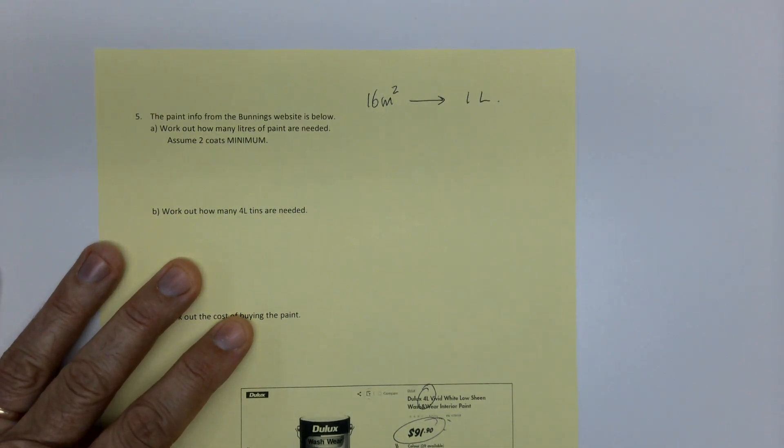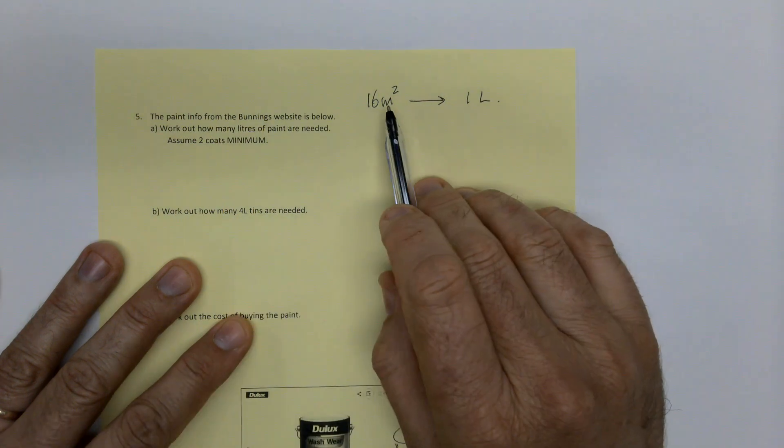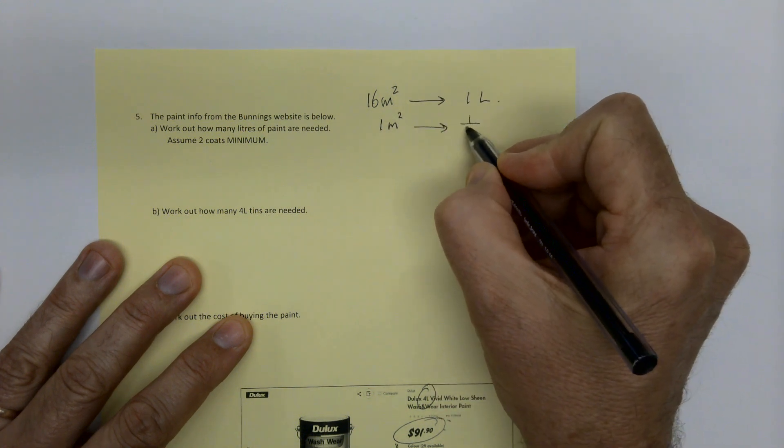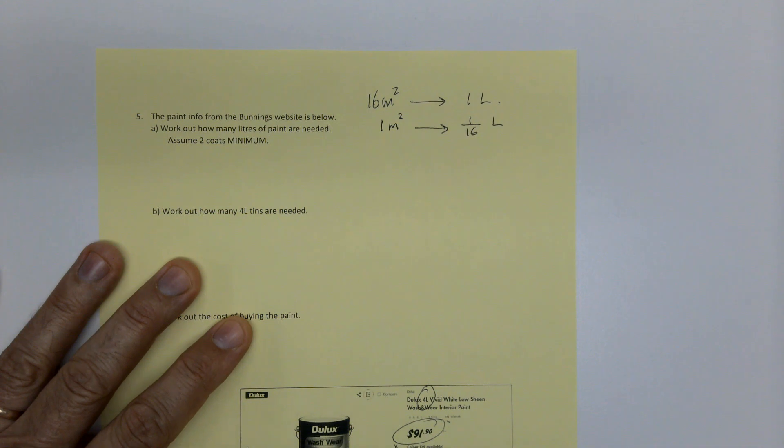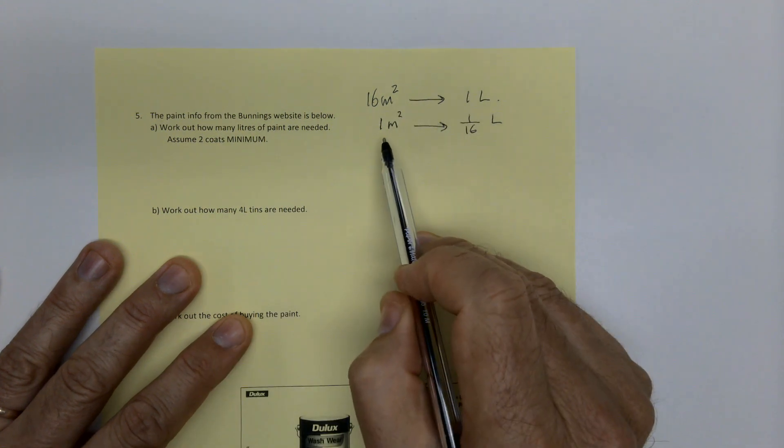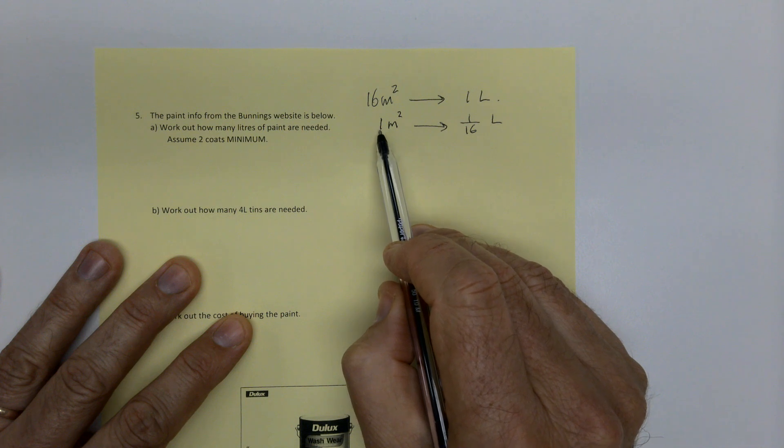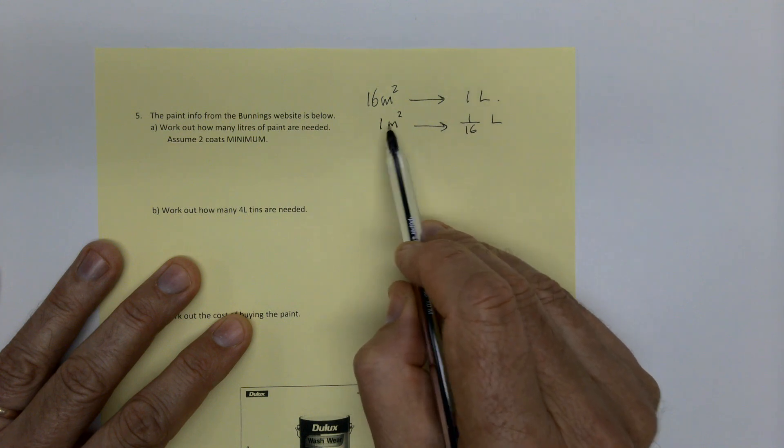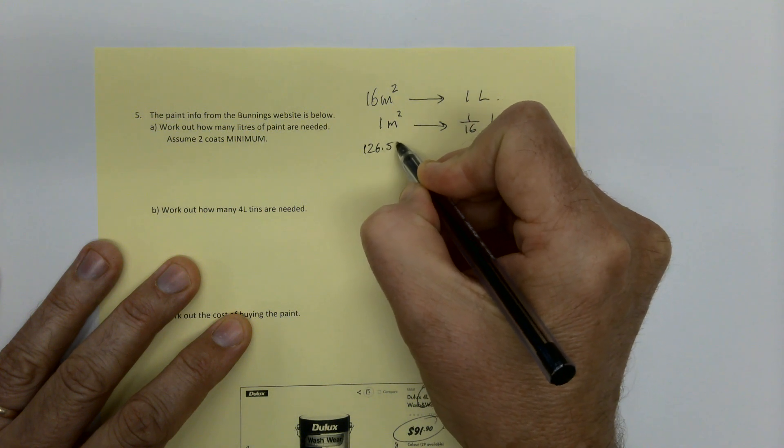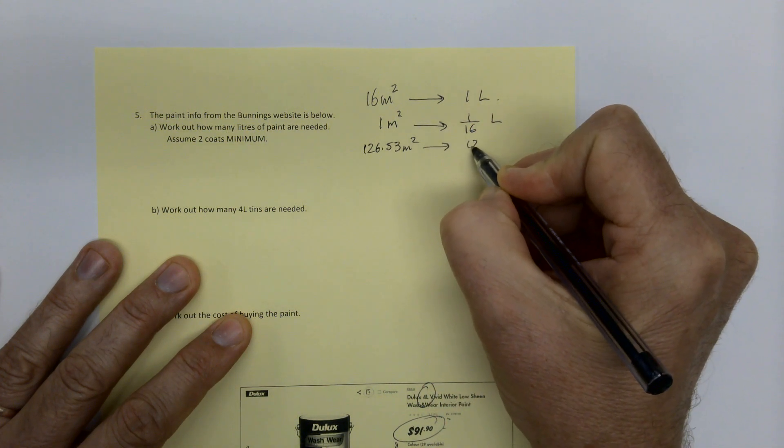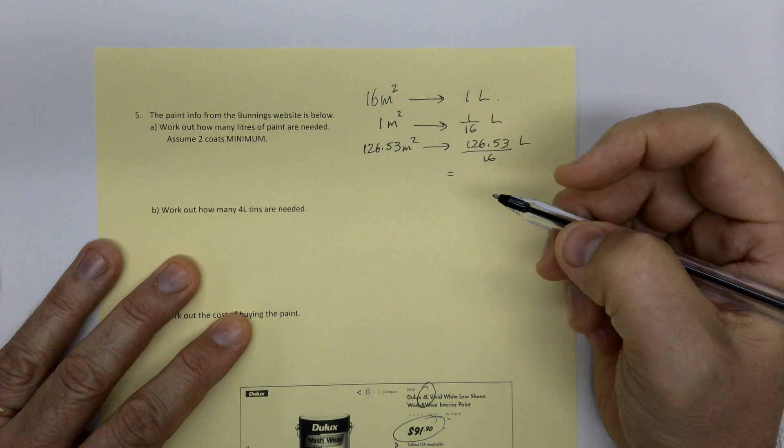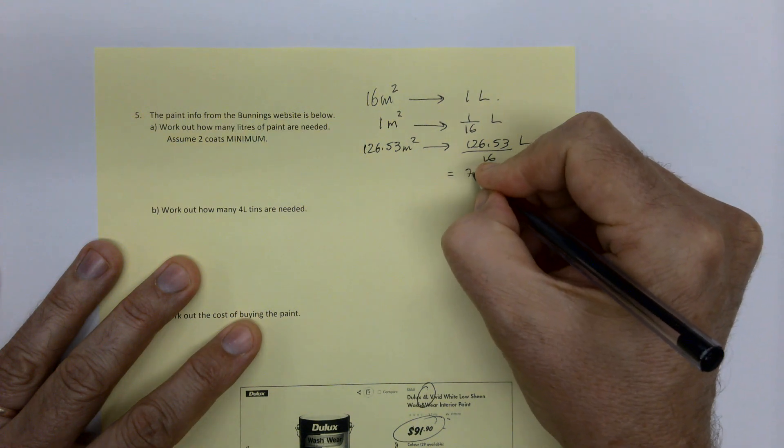Well, how much paint covers one square meter? Well, I just divide both sides by 16. So one square meter, it'll take one divided by 16 liters. All I've done is divided both sides by 16. Well, I don't want one square meter. I want two coats. How much do we want? We wanted 126.53. So now I'm going to multiply both sides by 126.53 square meters. So that ends up being 7.9 liters.